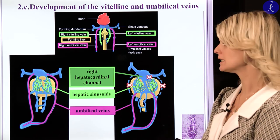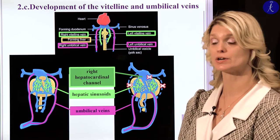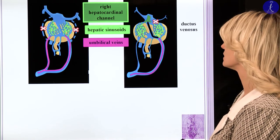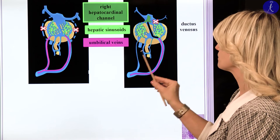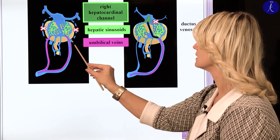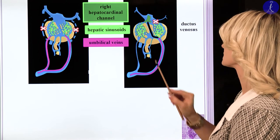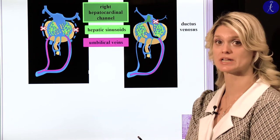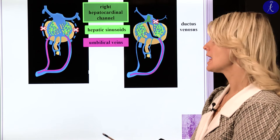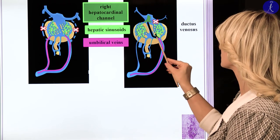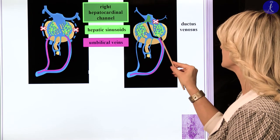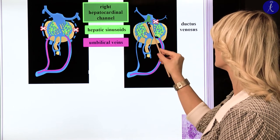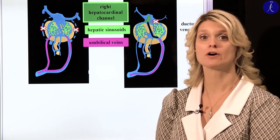The umbilical veins have connections with the hepatic sinuses, and since the umbilical veins carry oxygenated blood from the placenta, we will develop a direct connection between the umbilical vein and the right sinus horn. This direct connection is called the ductus venosus.